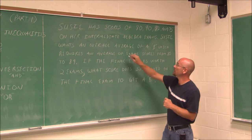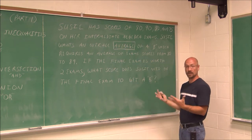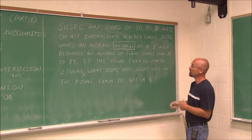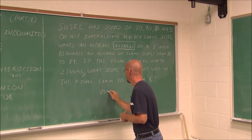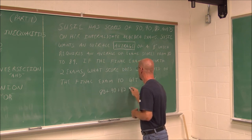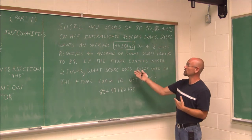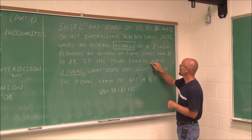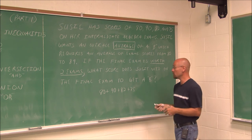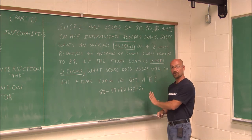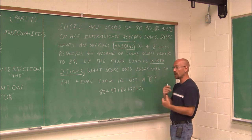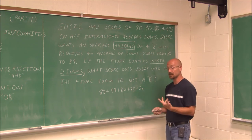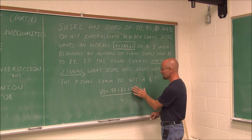The key word here is average — we sum up the values and divide by the number of values. She has scores of 80, 90, 82, and 75, plus the final exam score, which is what we're asked to find. The final exam is worth two exam scores, so that's our variable applied twice. We have 1, 2, 3, 4, 5, 6 — six total exams. To find the average, we sum everything up and divide by 6.